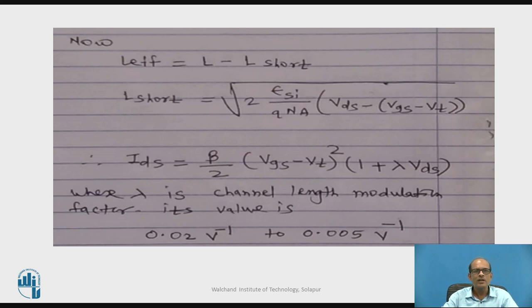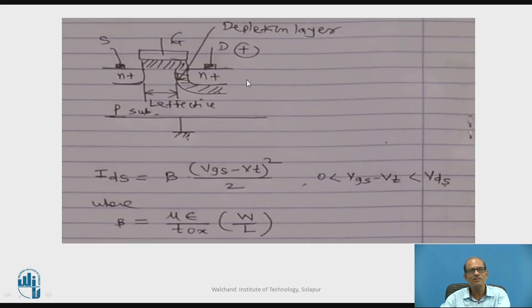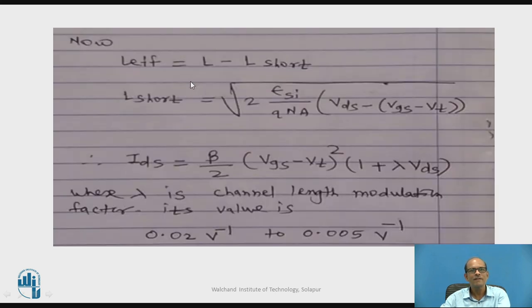L effective is given by L effective equals L minus L short. L short is shown in the previous diagram. And this L short is given by L short equals square root of 2 epsilon SI divided by Q into NA, in the bracket VDS minus VT times X minus A times VDS minus, in another bracket, VGS minus VT.